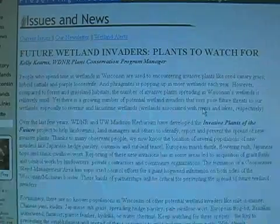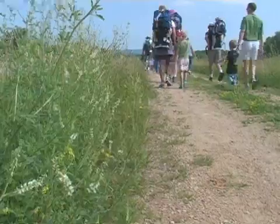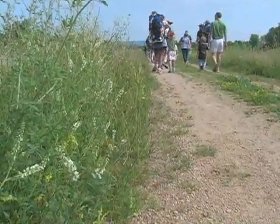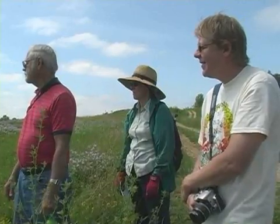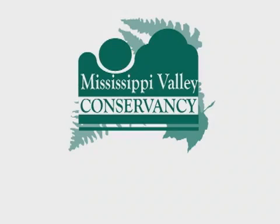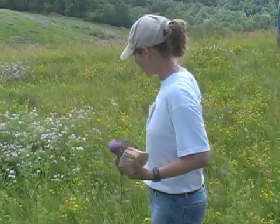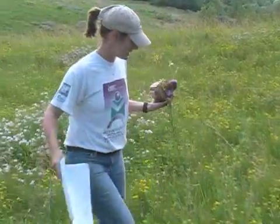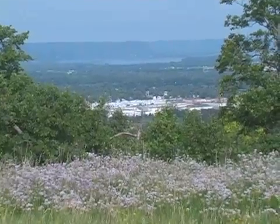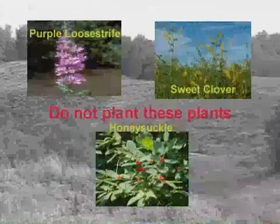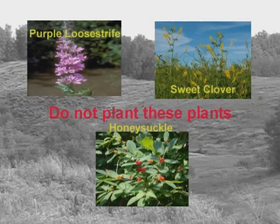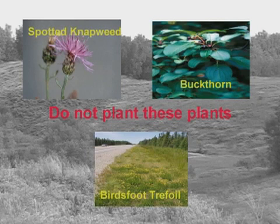One of the best things a person can do is volunteer for an organization like the Mississippi Valley Conservancy to go out and do restoration work. Through that work, they can learn what invasive species look like and how to deal with them. Also, if you're into gardening, do not plant invasive species in your yard. Check through the DNR website to confirm a species is not invasive, and choose native plants instead. You've got many beautiful, wonderful native plants that are tolerant of a lot of different conditions.